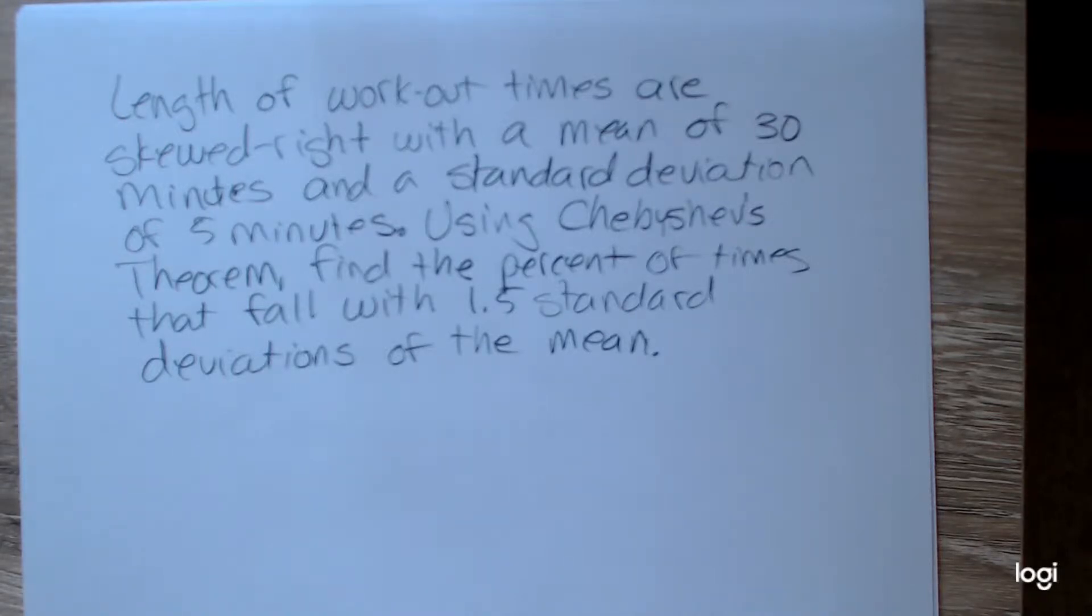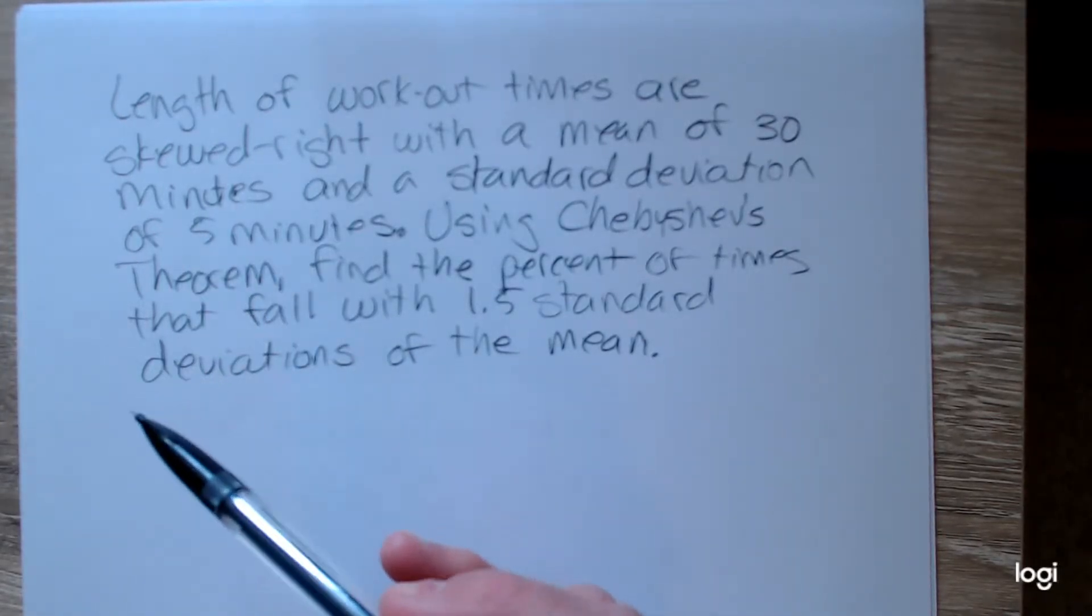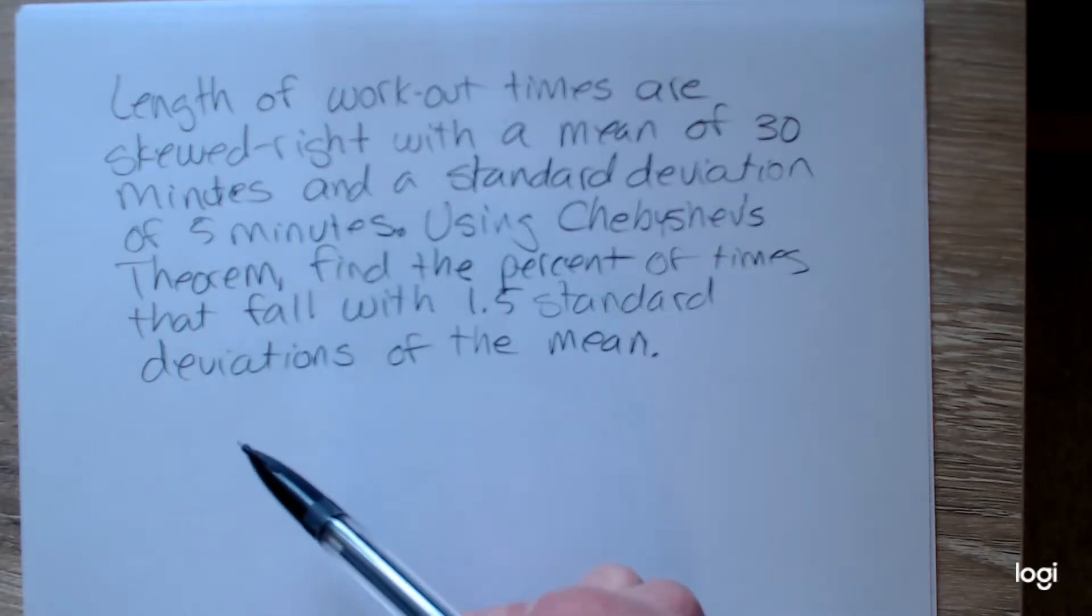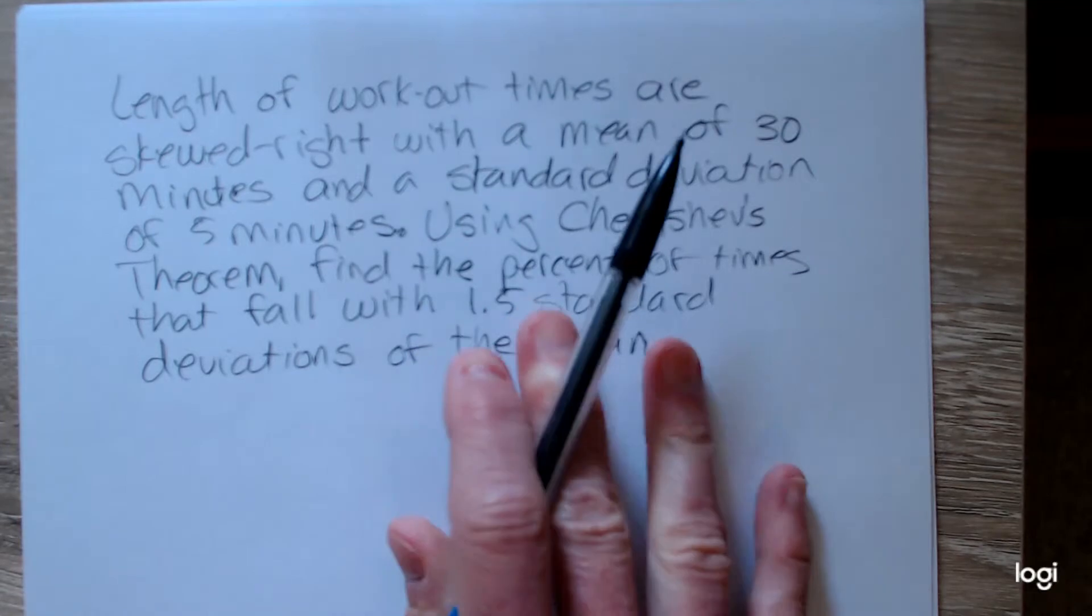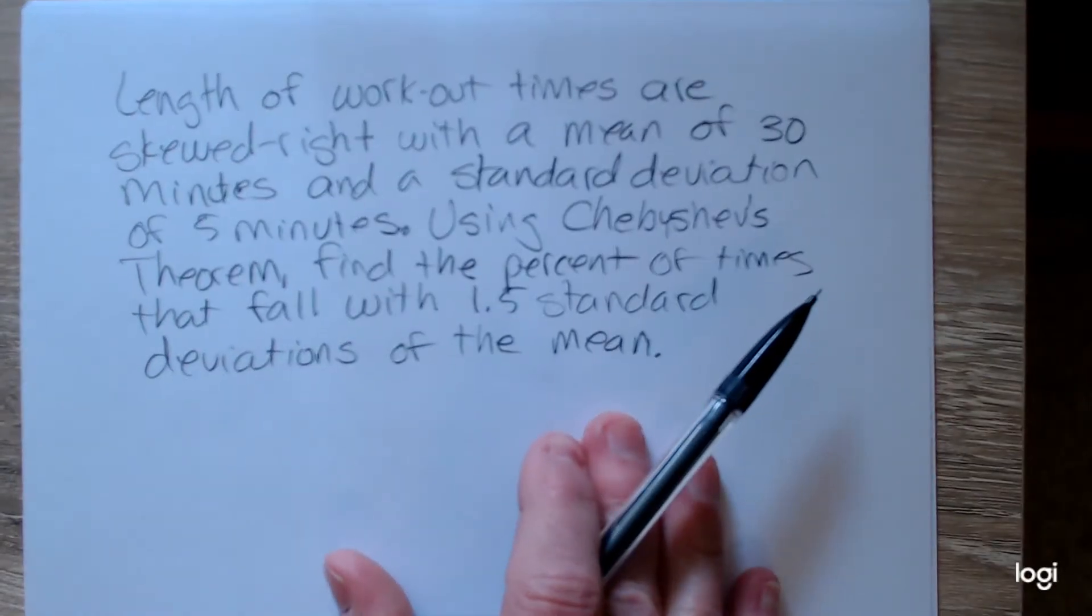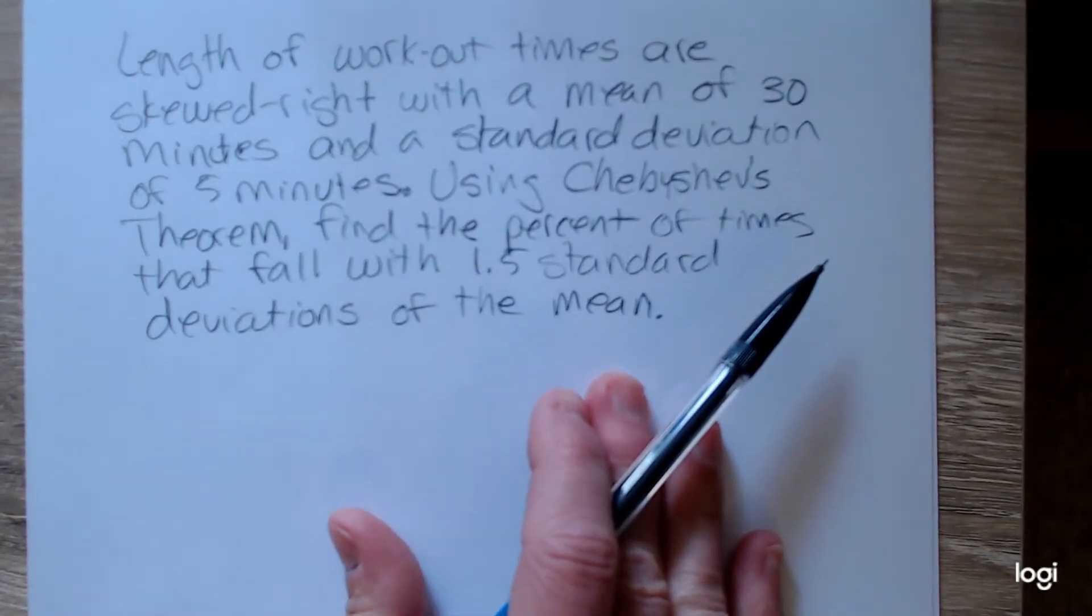What we have here is the length of workout times are skewed right with a mean of 30 minutes and a standard deviation of 5 minutes. Using Chebyshev's Theorem, find the percent of times that fall within 1.5 standard deviations of the mean.